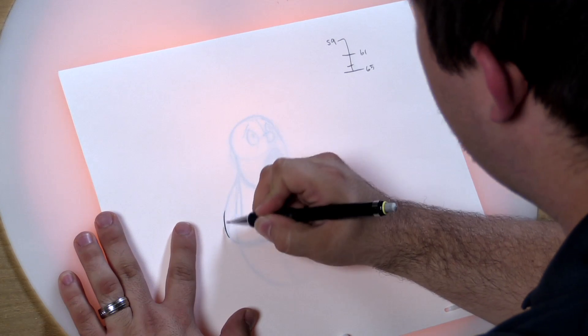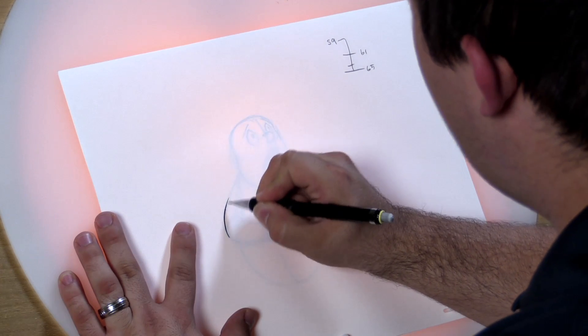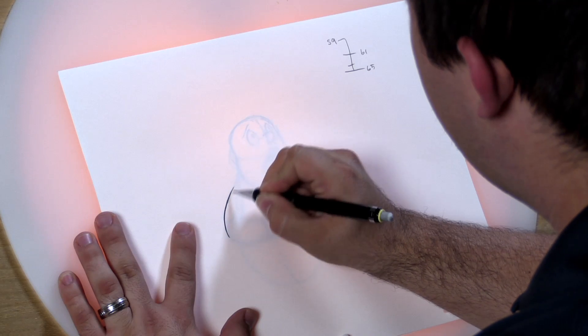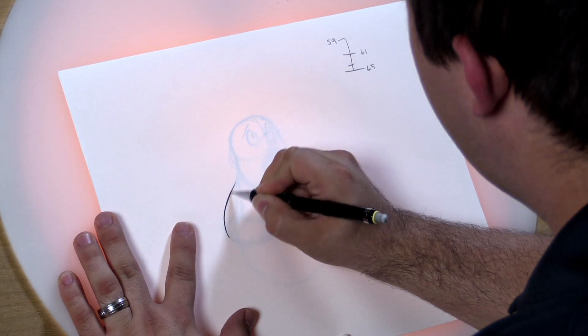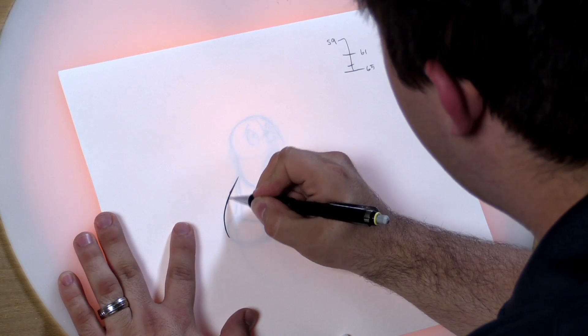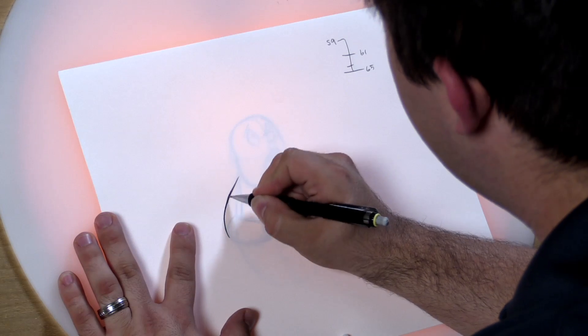You're going to want to make sure to taper your line so that way the edges are very thin and the middle is very thick. And they're going to string together to make it look like a long, continuous, cleaned up line.